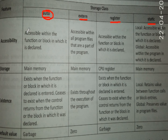The accessibility of auto is within the function or block in which it is declared. A block consists of all the elements within compound brackets. If we have declared any variable inside a block, then its accessibility is also within that block. Outside the block we cannot access that variable.